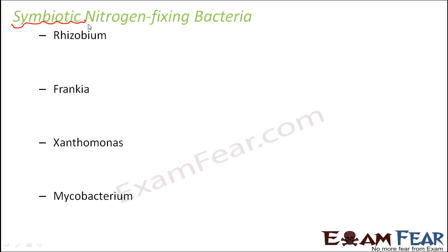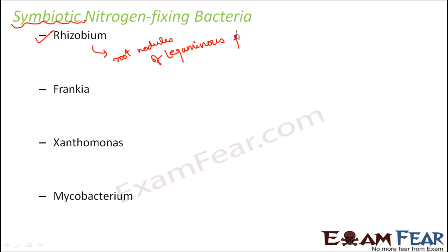The first example of symbiotic nitrogen fixing bacteria is Rhizobium. The speciality of Rhizobium is that they form nodules at the roots of leguminous plants, so they are always associated with root nodules of leguminous plants such as peas and beans. Normally they live freely in the soil, but they can only fix nitrogen when present in the root nodules.